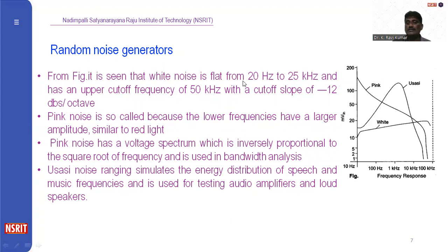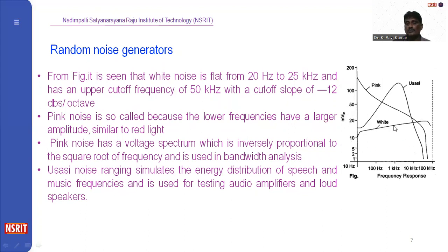The white noise is flat from 20 hertz to 25 kilohertz, and has an upper cutoff frequency of 50 kilohertz with a cutoff slope of minus 12 dB per octave. This minus 12 dB is the slope at which the cutoff frequency reaches 50 kilohertz.